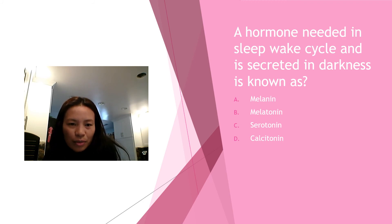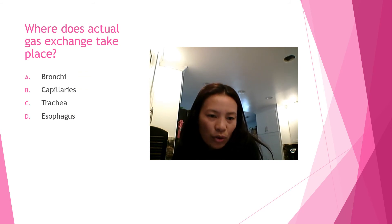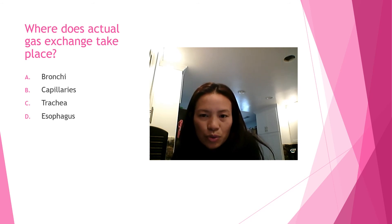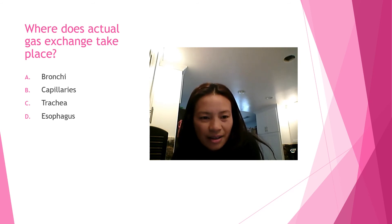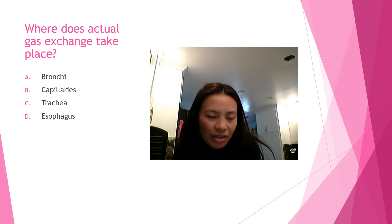Question nine: where does actual gas exchange take place? Is it A) bronchi, B) capillaries, C) trachea, or D) esophagus? The answer is capillaries. The trachea conducts air from the mouth and nose toward the lungs, bronchi distribute air throughout the lungs, and the esophagus transports swallowed food through the mediastinum from the pharynx.